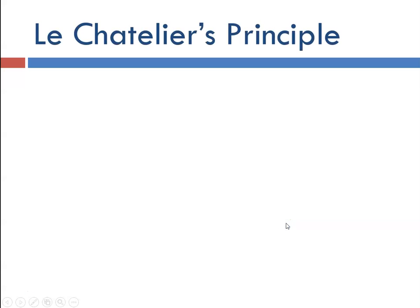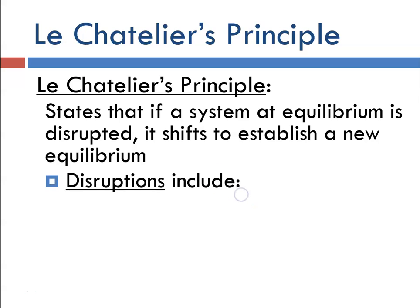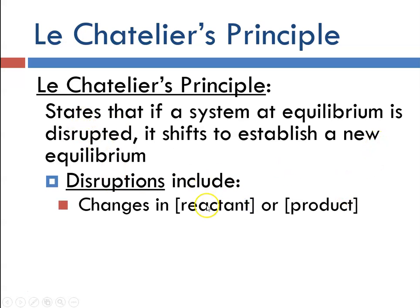Le Chatelier's principle states that if a system at equilibrium is disrupted, it will shift to reduce that disruption and to re-establish the new equilibrium. A stress on the system will result in a shift to remove the stress, and those disruptions could include changes in the reactant or product concentration — remembering that those brackets refer to molarity, moles per liter.